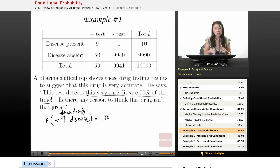Well, we might want to calculate the positive predictive value, right? So this would be the probability of disease given a positive result.